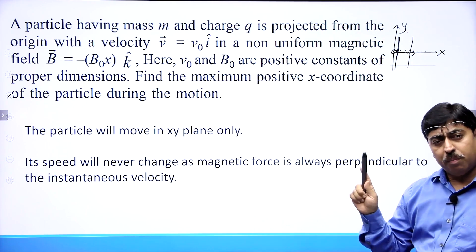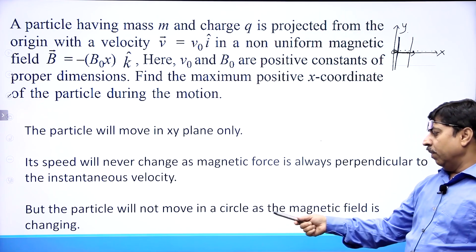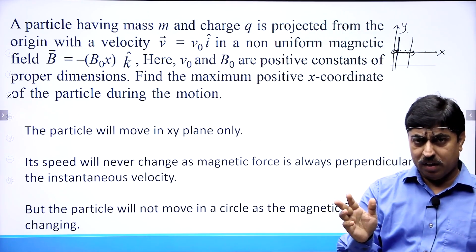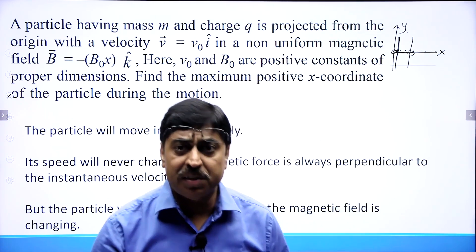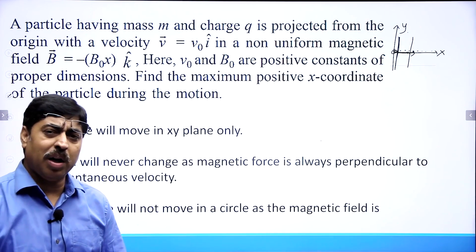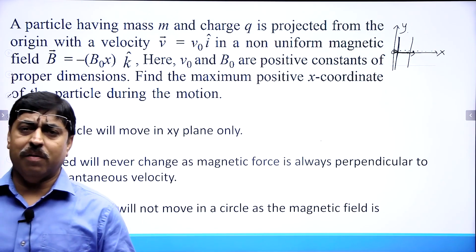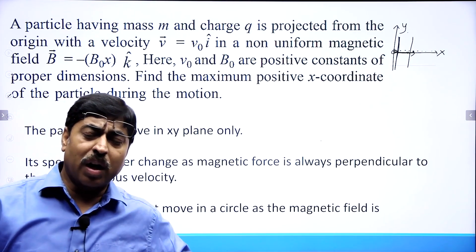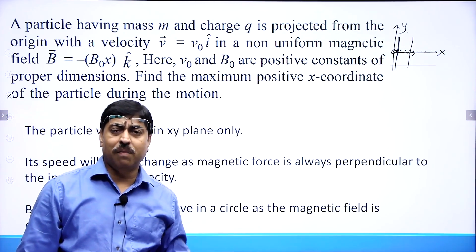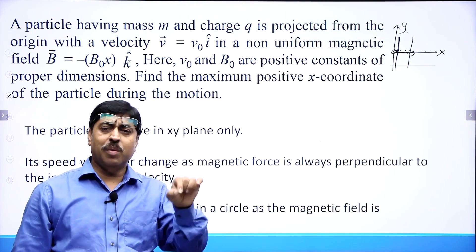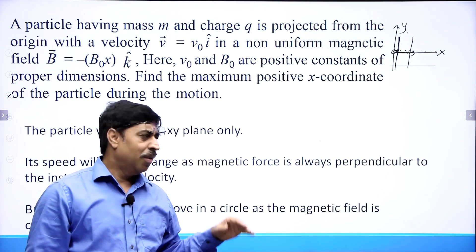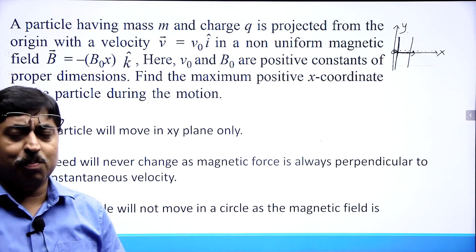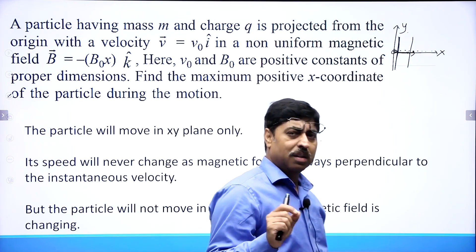But the particle will not move in a circle, as the magnetic field is not of constant magnitude. The speed is not changing, but the magnetic force is changing — because magnetic field strength changes as the particle moves in the x direction. For a particle to move in a circle of fixed radius with constant speed, the required centripetal force m v² / r must have constant magnitude, but here the magnitude of force is changing. So the particle cannot move in a fixed circle — the path is not circular.